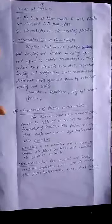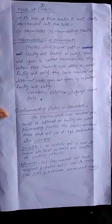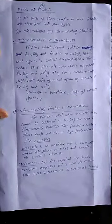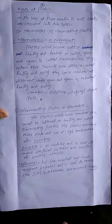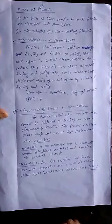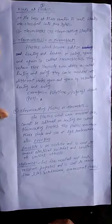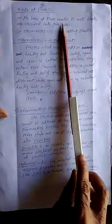Now, the kinds of plastics. When plastics are heated, they behave differently — all plastics do not have the same property. Some plastics become softened on heating and hard on cooling, and this can be repeated again and again. Other plastics, once heated and molded into a particular shape, become hard on cooling and cannot be softened again by heating. On the basis of their reaction to heat, or thermal behavior, plastics are classified into two types: thermoplastics and thermosetting plastics.